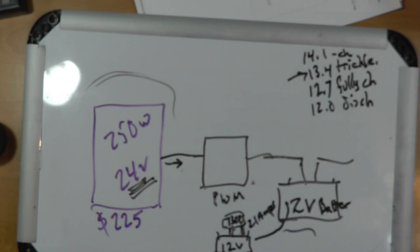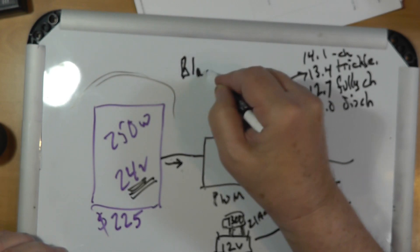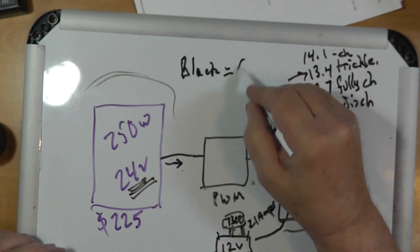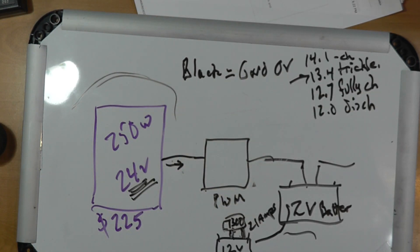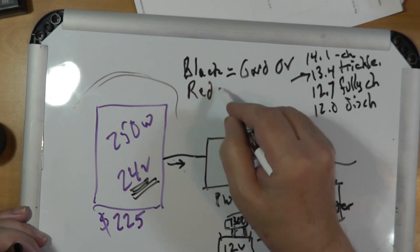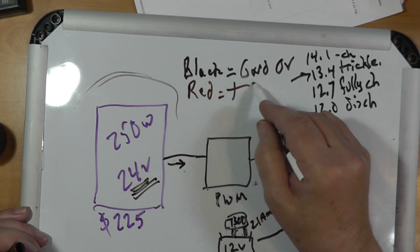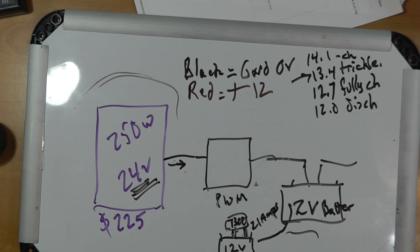Now, I'm using the ham radio convention for 12 volts, which is black equals ground, or zero volts. And red equals positive 12, or whatever one of these voltages is in here.